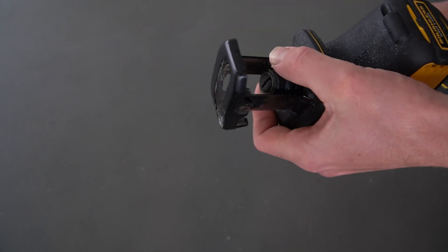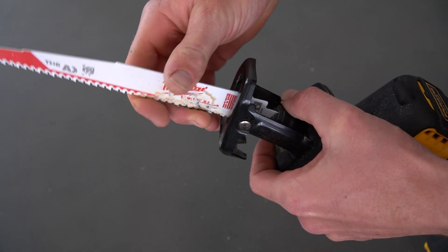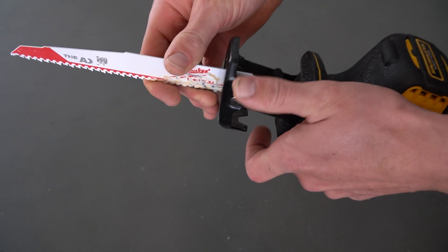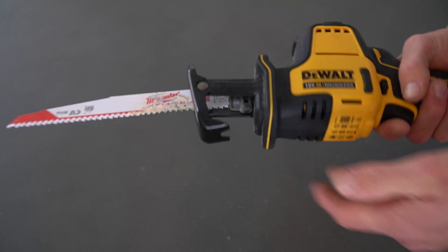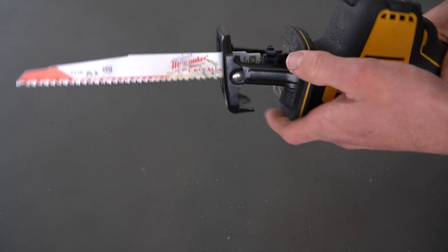So if we twist that and hold it, that pin is released. We can then slide the blade in, release the pin and wiggle that around, and you can hear that pin click in place and that blade is now stuck and secure in the tool.